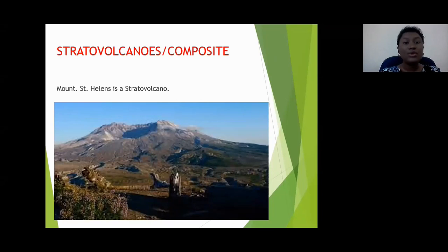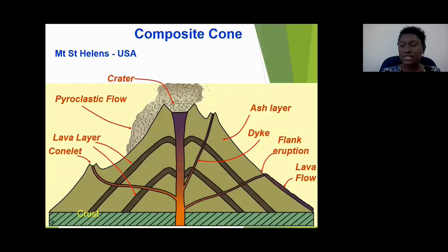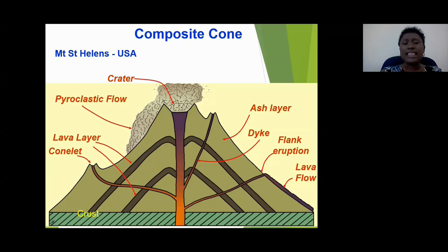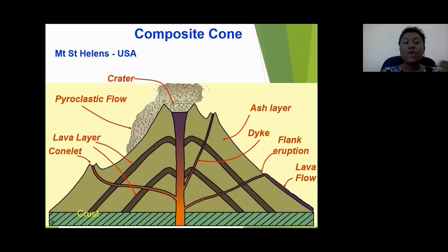Over time, when this volcano erupts, it is built up of alternating layers of ash and lava. This type of volcano is the one most people see in movies. When you see a Hollywood movie showing a volcano, most of the time it's a stratovolcano or composite volcano — like in Dante's Peak or the movie Pompeii. Those erupting volcanoes were stratovolcanoes.